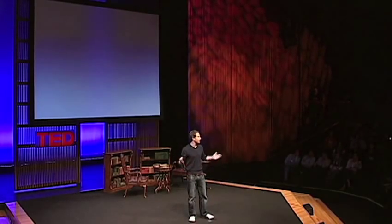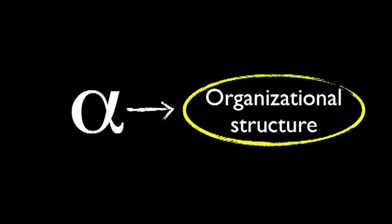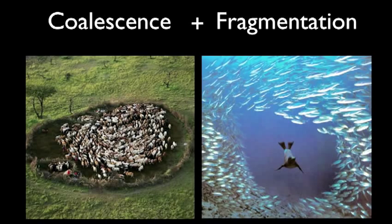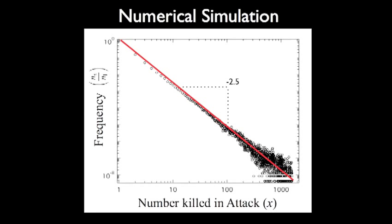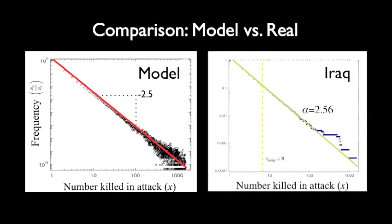So what? This is data, statistics — what does it tell us about these conflicts? That was a challenge we had to face as physicists. What we really found was that alpha, if we think about it, is the organizational structure of the insurgency. Alpha is the distribution of the sizes of attacks, which is really the distribution of the group strength carrying out the attacks. So we look at a process of group dynamics — coalescence and fragmentation, groups coming together, groups breaking apart. We ran the numbers and simulated it, and we can recreate these patterns using group dynamics to explain what we see in conflicts around the world.